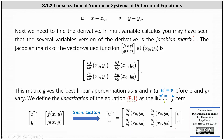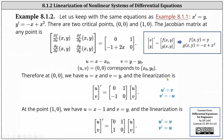Let's take a look at an example. Going back to example 8.1.1, we have the system x prime equals y and y prime equals negative x plus x squared. Recall the two critical points are (0, 0) and (1, 0). Since x prime equals y and y prime equals negative x plus x squared, we have f(x, y) equals y and g(x, y) equals negative x plus x squared.